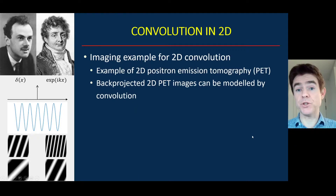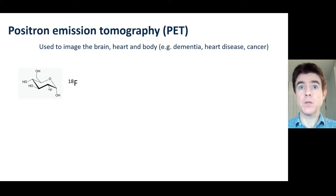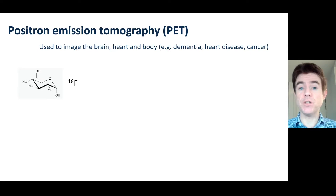In this video I want to give an example of convolution in two dimensions using positron emission tomography. Positron emission tomography is used to image the brain, the heart, and the body for looking at various diseases.